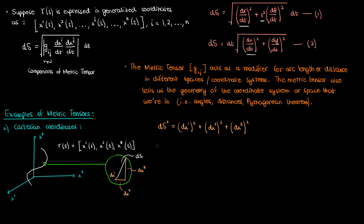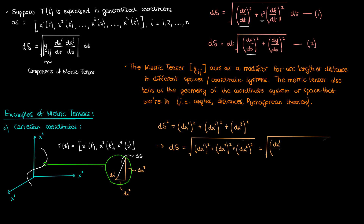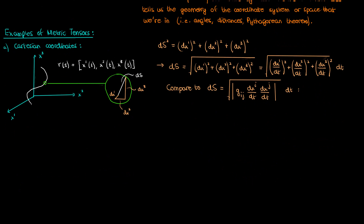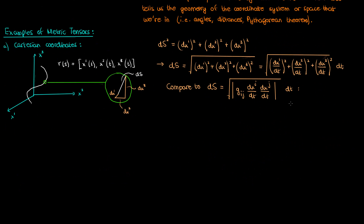Don't confuse the superscript indices with powers — in my tensor series the power will always be outside the parentheses. Isolating ds gives the square root of everything on the right. If I divide everything in the square root by dt squared and take the dt outside — which is allowed since it's equivalent to multiplying by 1 — I get the following expression. Let's now compare this to my general equation involving the metric tensor, in order to determine the components of the metric tensor g sub ij.